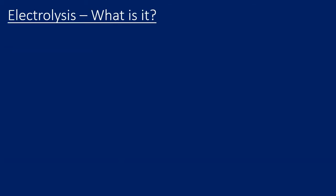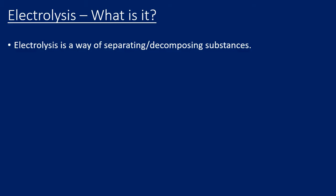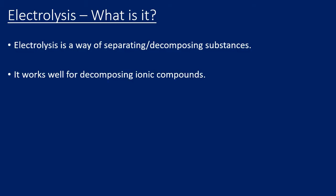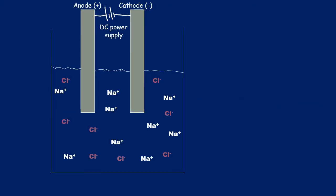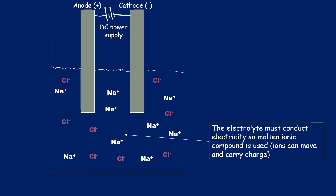Electrolysis is a way of separating and decomposing substances — it works very well for decomposing ionic compounds. Ions are attracted to the cathode and the anode where they are said to be discharged. Looking at an example of molten sodium chloride: the electrolyte must be molten, not solid, because if it's solid the ions can't move and can't conduct. So here we are using molten sodium chloride.